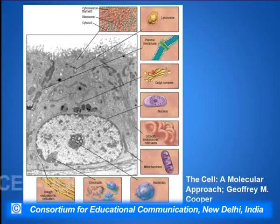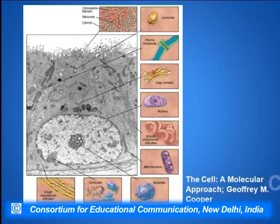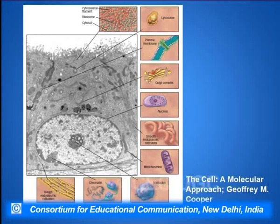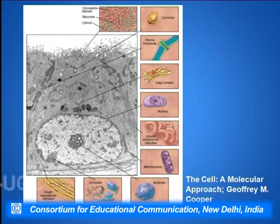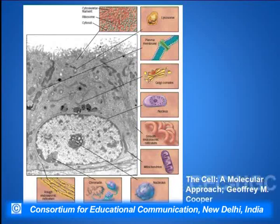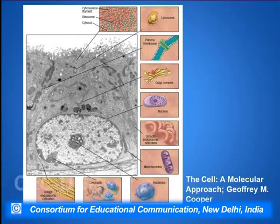This is an electron microscopy picture of a cell which shows the various structural entities present within the cell. Within a cell there are different organelles which function in a very coordinated and unified manner. There is a nucleus, there is an endoplasmic reticulum, then there are ribosomes, mitochondria, chloroplast, and lysosomes. There are a number of cell organelles present within a cell.